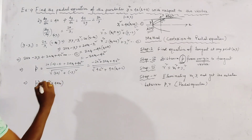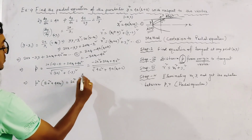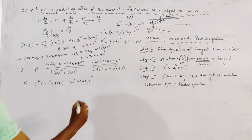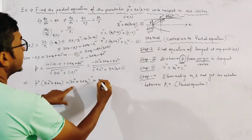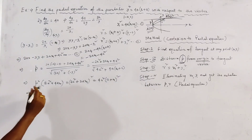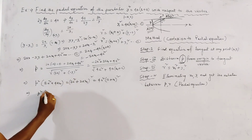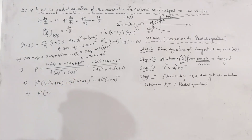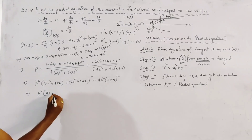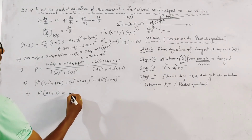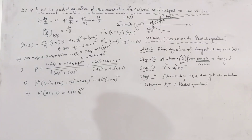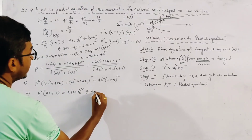Taking common factor 2a from the right side, we get: P² · 4a(a + x1) = 4a²(a + x1)². Cancelling 4a from both sides: P²(a + x1) = a(a + x1)². This simplifies and expanding gives us: ax1² + 2a²x1 - P²x1 + a³ - 2aP² = 0. This is Relation 4.